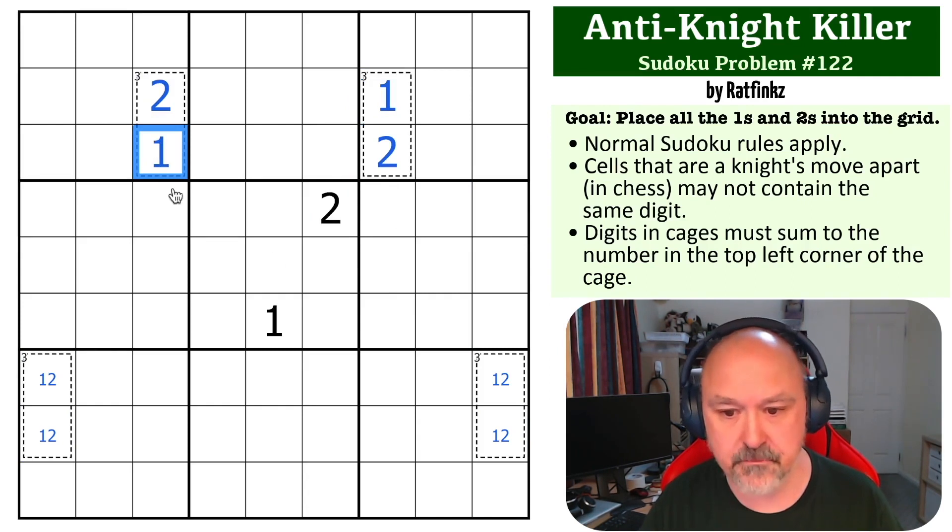Now we want to look at one and two in this box because we know that we cannot put ones and twos in here, so the one and the two must go up here. This two takes two out of here, but this two sees that by that knight's move shape, so that can't be the two and this becomes the two. This one sees that one, so this becomes the one.